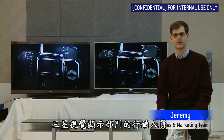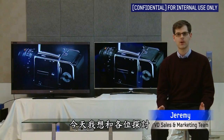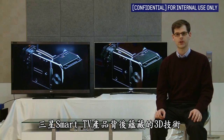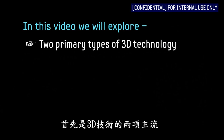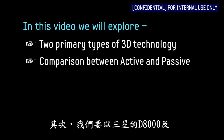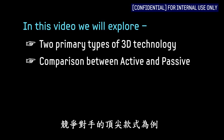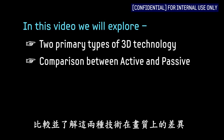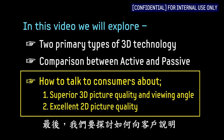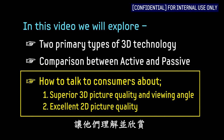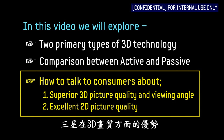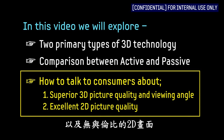Hi, I'm Jeremy. I'm a marketer in Samsung's Visual Display division and I'm here to talk about the 3D technology behind Samsung's Smart TV lineup. In this video, we'll look at three important areas: first, we'll explore the two primary types of 3D technology, active and passive. Second, we'll explore the differences in picture quality between the two technologies using Samsung's D8000 and our competitor's leading model. And finally, we'll explore how we can talk to shoppers to help them understand and appreciate Samsung's advantage in 3D picture quality and the uncompromised 2D picture delivered by our products. So, let's get started.